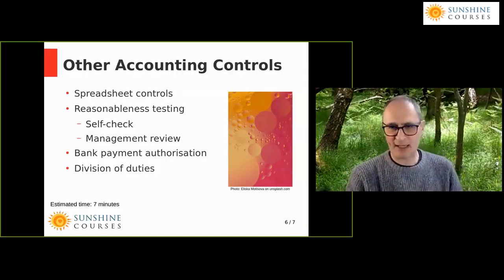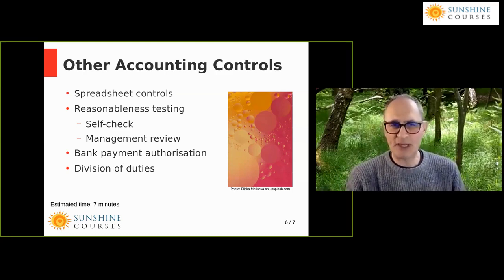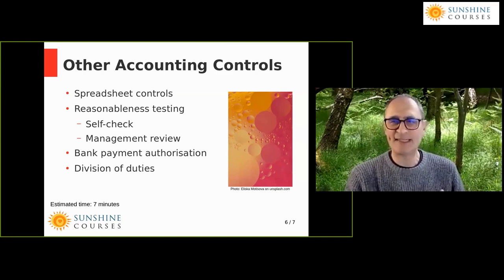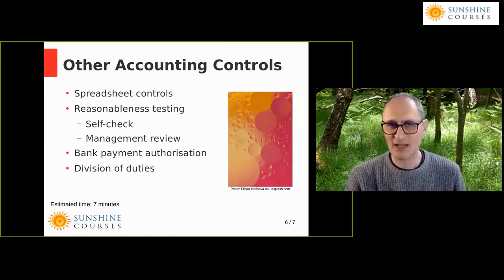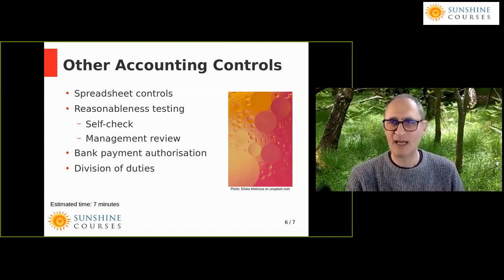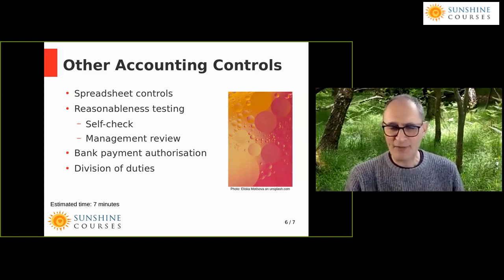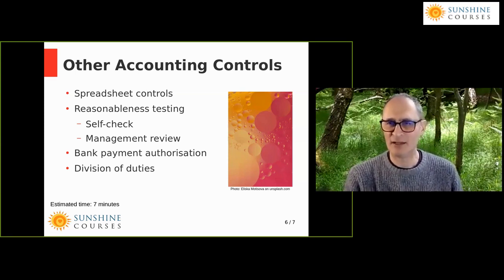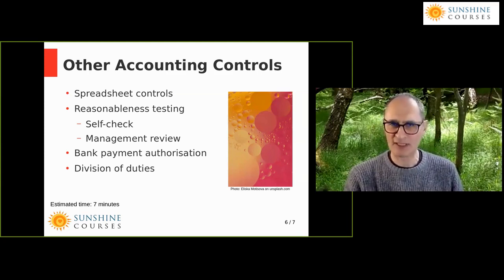Some other controls to go through quickly: reasonableness testing — just look at the accounts and see if they make sense. For example, if sales show a negative figure, something is clearly wrong. If you have sales of a thousand pounds and material costs of nil, you'd want to know how that's possible. You would typically look at the accounts yourself to ask 'does this look and feel right?' and in particular when you go through the accounts with management.